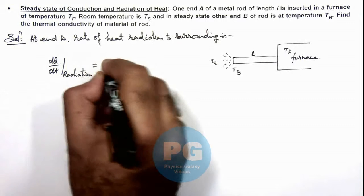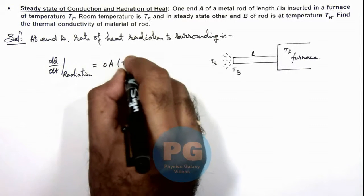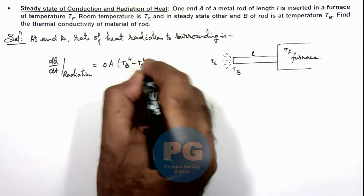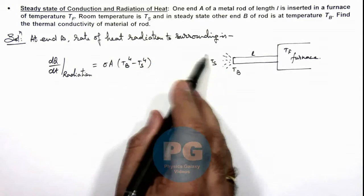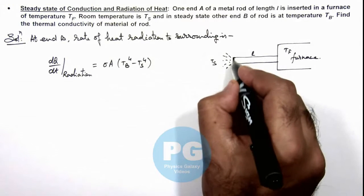From this end B, we can write as σA(T_b^4 - T_s^4). That is the rate at which heat is being radiated. We are assuming the surface of end B as a black body.